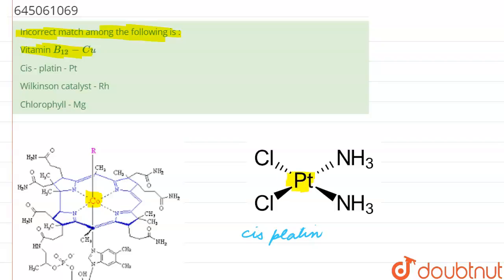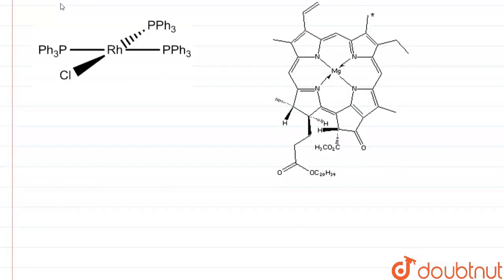Now let us see the rest option. This is Wilkinson catalyst and yes it does contain rhodium in it as given in the question.